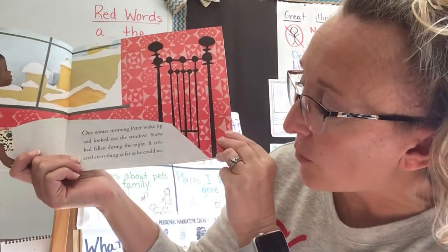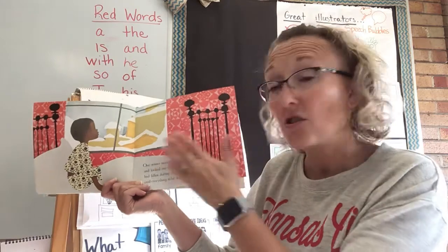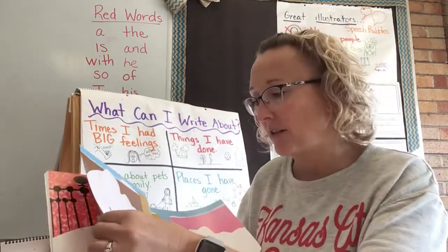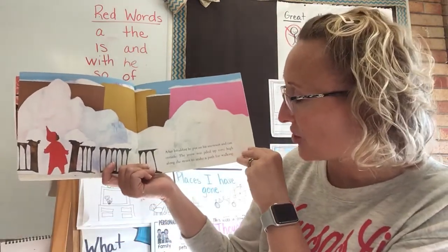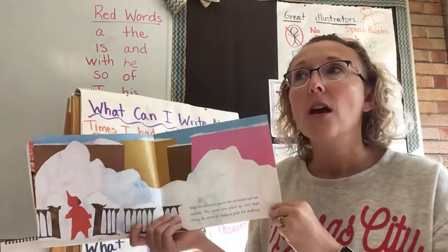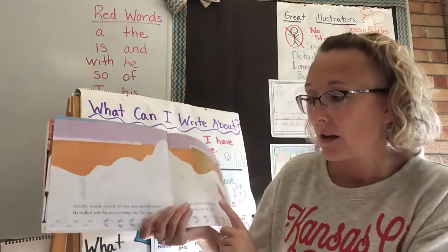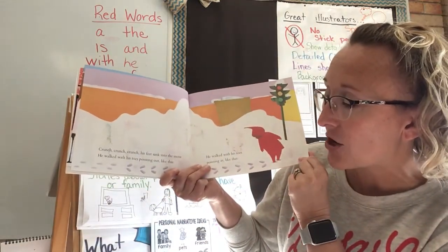I'm going to start by reading you a narrative. This one's by Ezra Jack Keats and it's called 'The Snowy Day.' It's just about a day that a little boy played in the snow — a really easy topic. 'One morning, Peter woke up and looked out the window. Snow had fallen during the night. It covered everything as far as he could see.' This starts with one winter morning. After breakfast, he put on his snowsuit and ran outside. The snow was piled up very high along the street to make a path for walking.